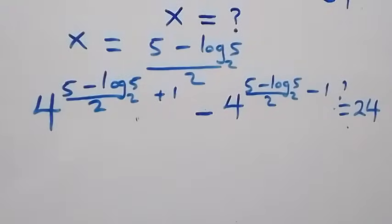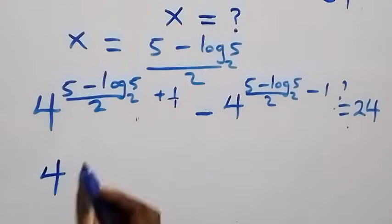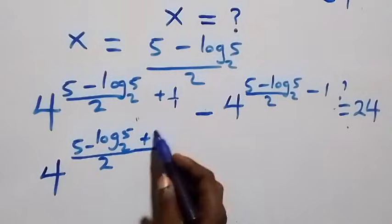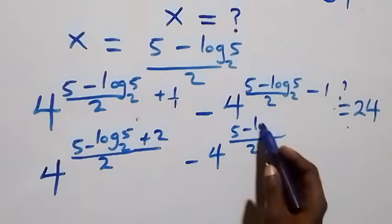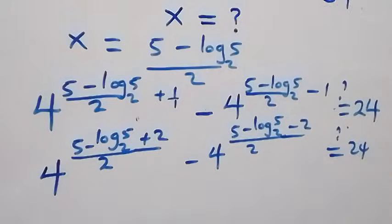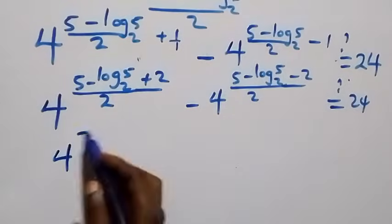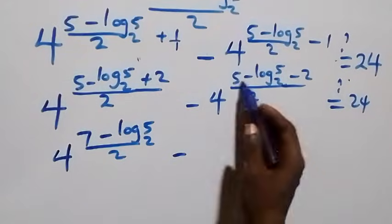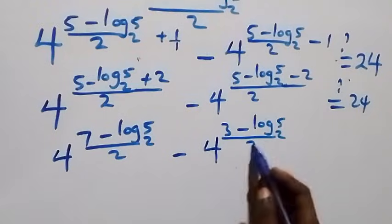Then next step, we bring the fractions together. That is, we have 4 raised to power (5 minus log₅2 plus 2) over 2, also minus 4 raised to power (5 minus log₅2 minus 2) over 2, is equal to 24 on this side. That is, 5 plus 2 is 7, so we have 4 raised to power (7 minus log₅2) over 2, then minus — 5 minus 2 is 3 — we have 4 raised to power (3 minus log₅2) over 2, equals 24.